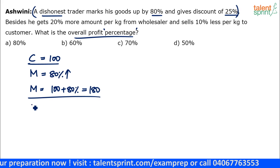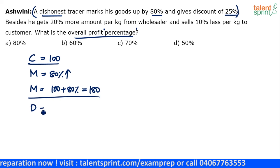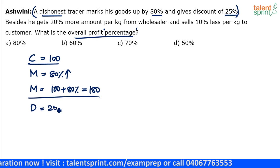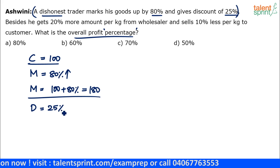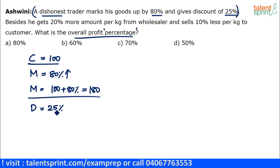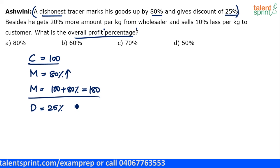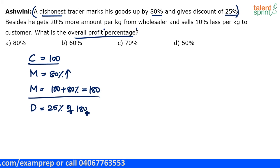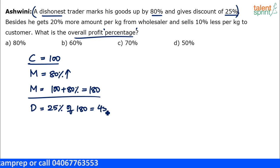Discount is 25 percent. Discount is always calculated on the mark price, so 25 percent of 180, which is one-fourth of 180, equals 45.